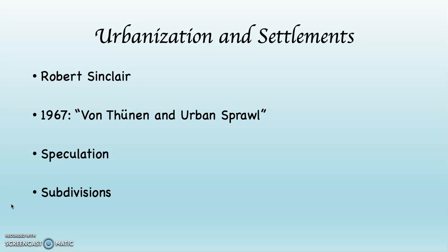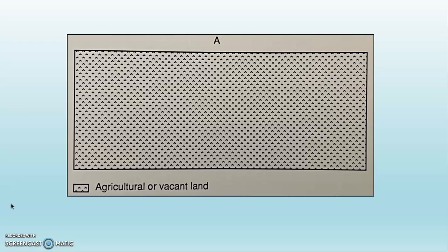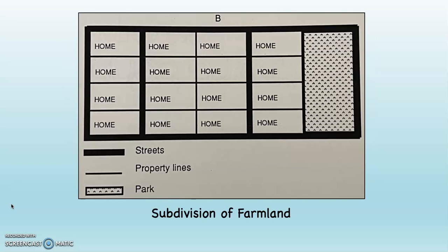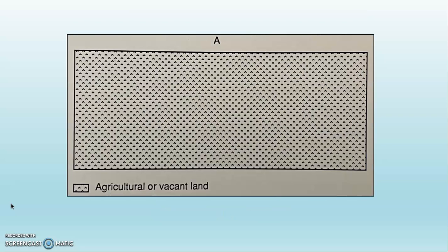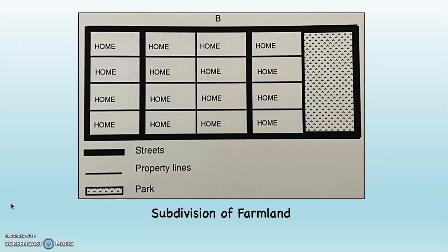The land goes from being owned by one person — the farmer — to eventually, after it is developed and subdivided, being owned by many people. Looking at these diagrams, you can see that the big rectangle is either agricultural or vacant land. Then it gets subdivided and turned into houses and, in this case, a park — going from one big plot with farming to 16 houses and a park, with streets and everything else that goes with a modern division of the landscape.